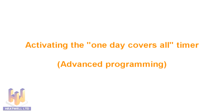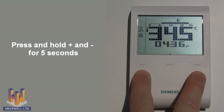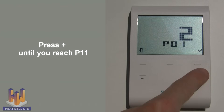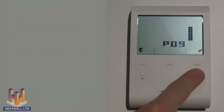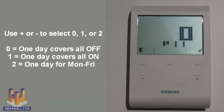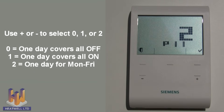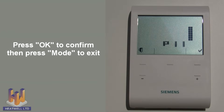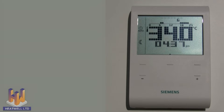Activating the one day covers all timer. This option allows you to set the timer for just one day and the unit will apply those times for every other day. To turn this option on, go to the advanced settings menu by pressing the plus and minus buttons for 5 seconds, then let go. P01 will show. Use the plus button until you see P11, then press the OK button. Now use the plus or minus buttons to change between 0, 1, and 2 — 0 means this option is turned off, 1 means it's turned on, and 2 is a different option where the unit will use the same temperature for only 5 days and a different temperature for Saturday and Sunday. In this case we will select 1. Press OK to confirm and then press the mode button to exit. Now you can enter on and off times for just one day and these times will automatically apply to all other days of the week.